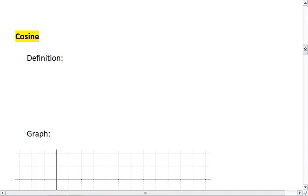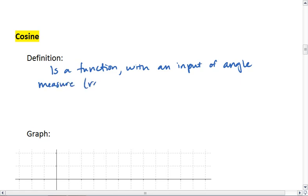Similar to sine, cosine is a function. Cosine also has an input of angle measure, and this is in radians or degrees.